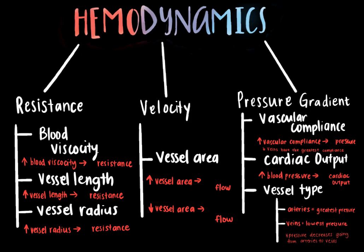Now let's do a quick recap of the three main factors that affect blood flow and the factors that influence them. The three main factors are resistance, velocity, and pressure gradient. Resistance is influenced by blood viscosity, vessel length, and vessel radius — as blood viscosity and vessel length increase, resistance also increases, but as vessel radius increases, resistance decreases. Velocity is mainly influenced by vessel area: a higher vessel area means slower flow, and a lower vessel area means faster flow. Lastly, pressure gradient is influenced by vascular compliance, cardiac output, and vessel type — higher vascular compliance means less pressure, greater blood pressure means higher cardiac output, and arteries have the greatest pressure while veins have the lowest, so pressure decreases going from arteries to veins.